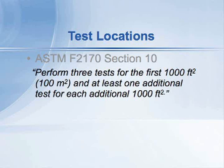So if you had 10,000 square feet to test, you would place 12 probes spread across that area. It doesn't mean apply the first three probes within the first 1,000 square feet — it's just the total number of probes that have to be used for the area that you're testing.